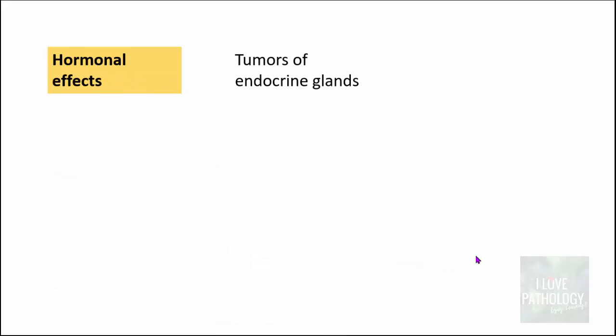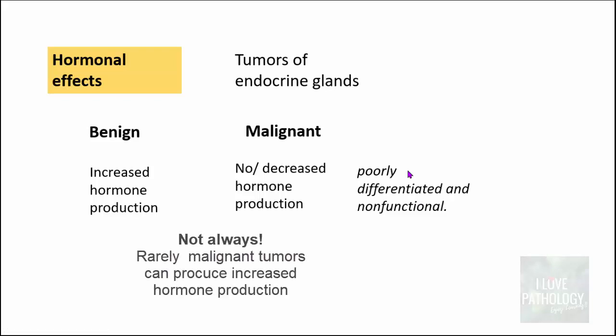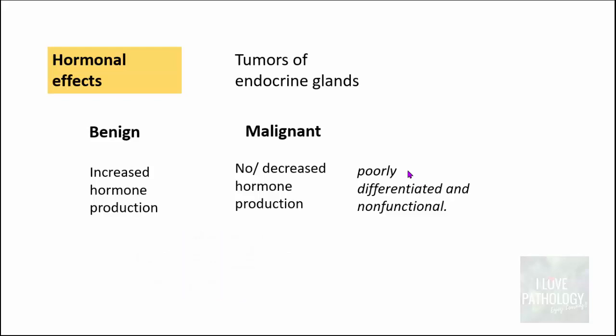Coming to hormonal effects — usually we discuss these when talking about tumors of endocrine glands. Among benign and malignant tumors, it is the benign tumors that actually cause increased hormone production. Malignant tumors do not cause increased hormone production because they are most often poorly differentiated and non-functional, and they can also destroy the normal endocrine gland itself. That is why malignant tumors do not show increased hormone production, whereas benign tumors do.